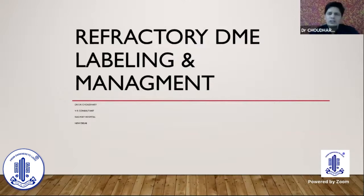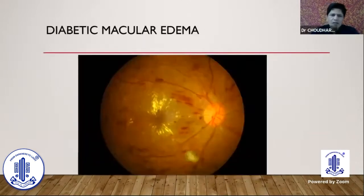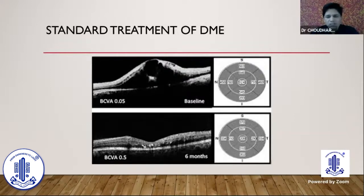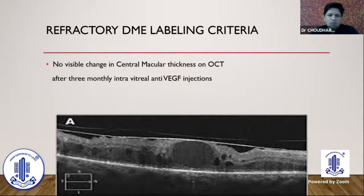Today I will be talking about refractory DME, its labeling and management. In our clinic, all of us have seen diabetic macular edema — it's not very difficult to diagnose and treat. The standard treatment these days is intravitreal anti-VEGF injections, and most of the time we get the response we want: a sudden decrease in central macular thickness and proportionate increase in vision.